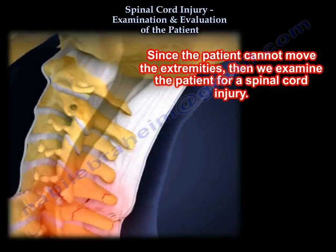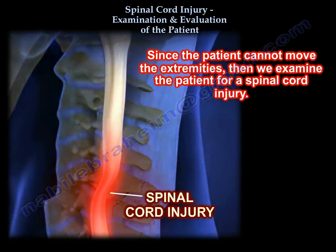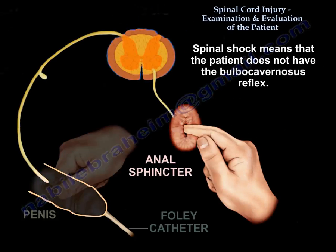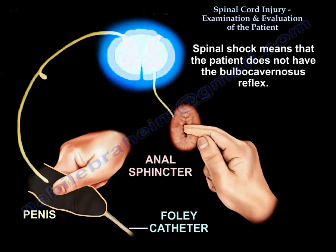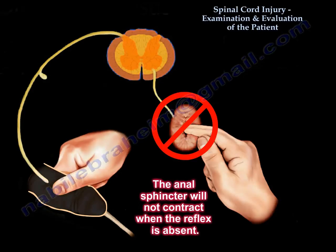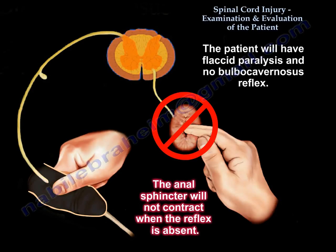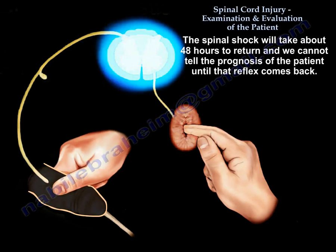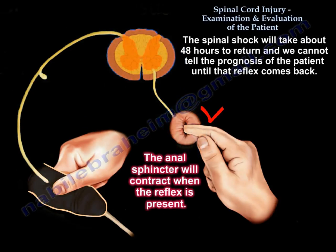Since the patient cannot move the extremities, we examine the patient for spinal cord injury. The first question we ask is: is the patient in spinal shock? Spinal shock means the patient does not have a bulbocavernosus reflex. The patient will have flaccid paralysis and no bulbocavernosus reflex. Spinal shock will take about 48 hours, and we cannot tell the prognosis of the patient until that reflex comes back.